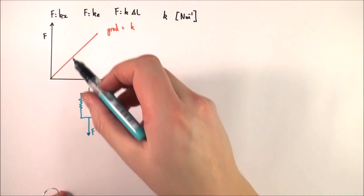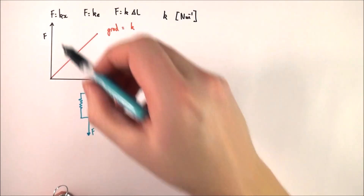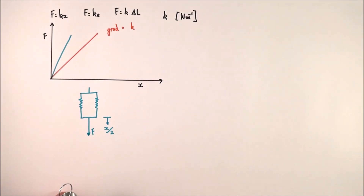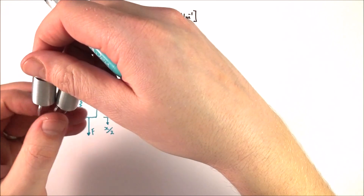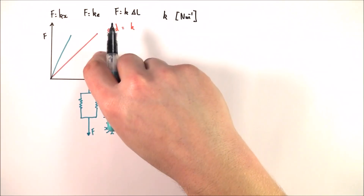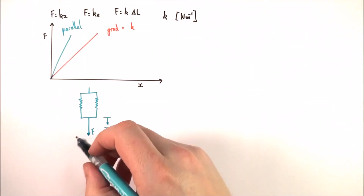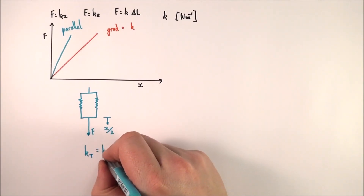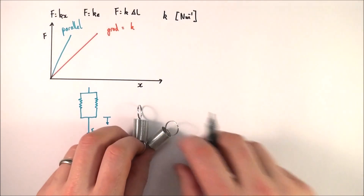If you apply the same force, the extension you get would be half as much. So with the same force, you'd have half the extension. If you were to plot it, the gradient is going to be twice as steep — for the same force you get half the extension — meaning the gradient is twice as big, so the spring constant increases. For two springs in parallel, the total spring constant is equal to k1 plus k2.